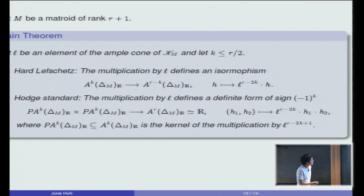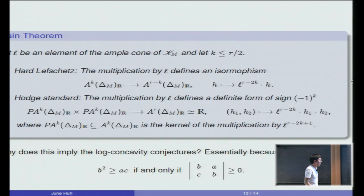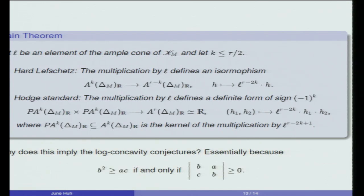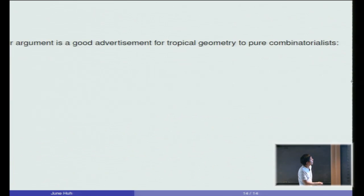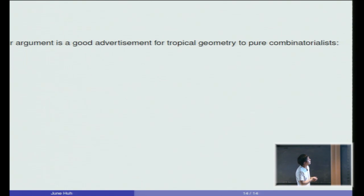So why does this imply the log-concavity conjectures? Well, this is essentially because of this equivalence: if you have three numbers a, b, c, then b squared is greater than or equal to a times c if and only if this 2 by 2 symmetric matrix has a positive determinant. What we're doing here is essentially showing that a bunch of matrices, k of them, for each choice of your ample class L, is positive definite. And in particular, certain 2 by 2 matrices are positive definite, and that is what gives the log-concavity. And certainly these other inequalities, the higher inequalities, also produce certain interesting matroid inequalities.